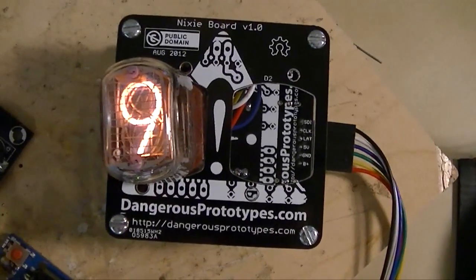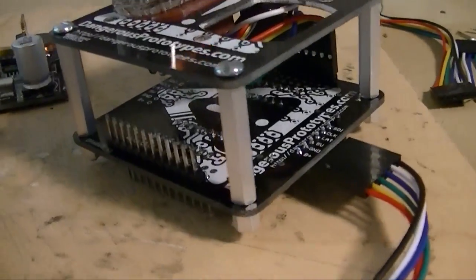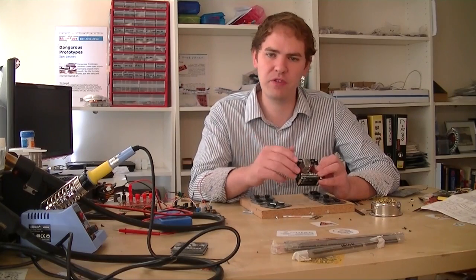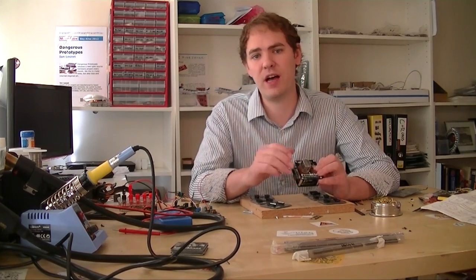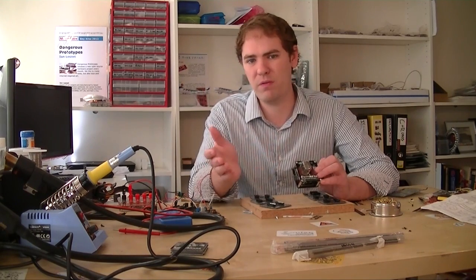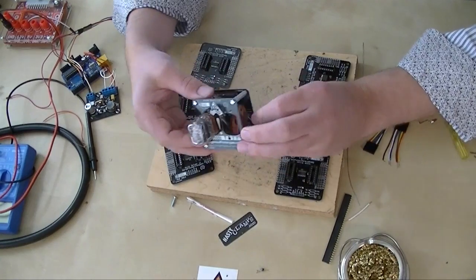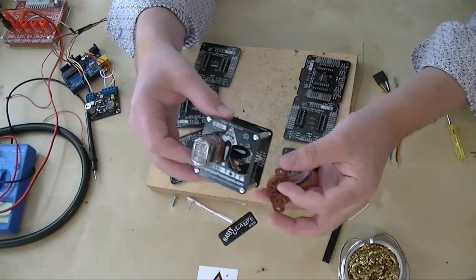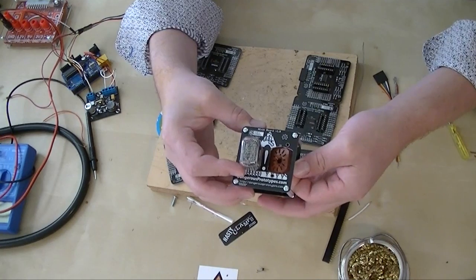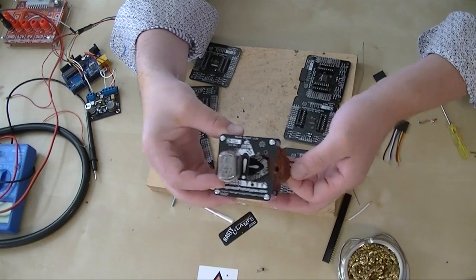This is the basic Nixie Tube module we came up with. It takes two IN12 tubes. These are digit tubes or sometimes there are symbols inside of them. They're really common and really cheap still. You can get them on eBay, boxes of 100 for 50 cents a piece. There's also sockets for them. So in the carrier board, we can fit two IN12 Nixies like that.